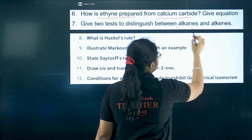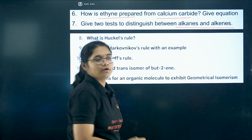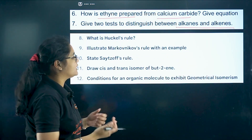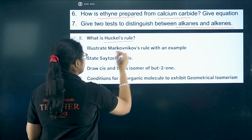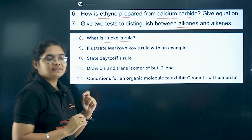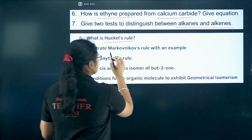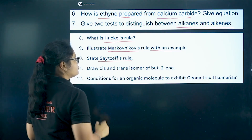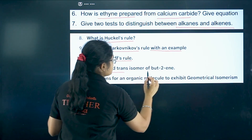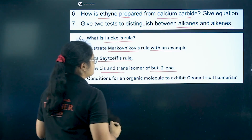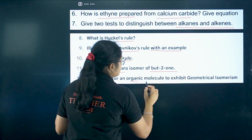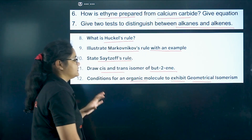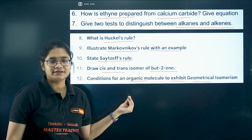Test to distinguish between alkanes and alkenes — you can write the use of bromine water or decolorization of bromine water. Then in aromaticity, what is Hückel's rule? Markovnikov's rule with an example — important question. Zaitsev's rule with an example. Cis and trans isomers of but-2-ene, and conditions for an organic molecule to exhibit geometrical isomerism — this can easily be a two marker question.